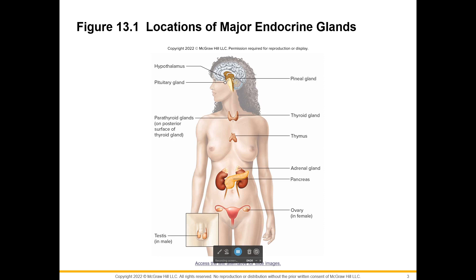Your parathyroid and thyroid are in the throat, named after the thyroid cartilage — or the thyroid cartilage maybe is named after the thyroid gland — either way, in the throat. Thymus on the heart. Adrenal glands on the kidneys, the pancreas — a very large and important gland — and then the ovaries and testes for males and females.